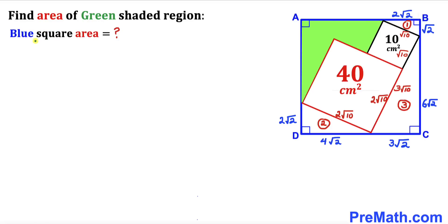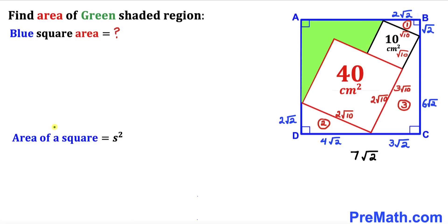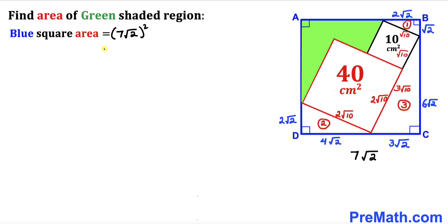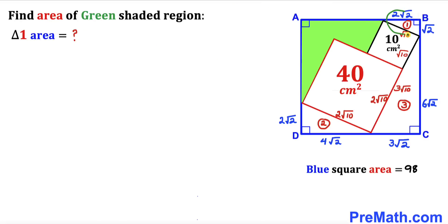To calculate the area of blue square ABCD, we note that its side length is 4√2 + 3√2 = 7√2. Using the area of a square formula, Area = s² = (7√2)² = 49 × 2 = 98 cm².